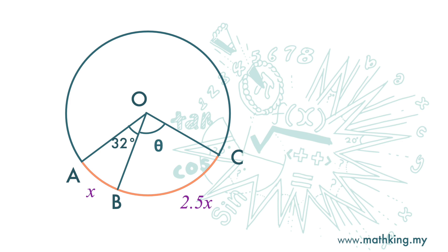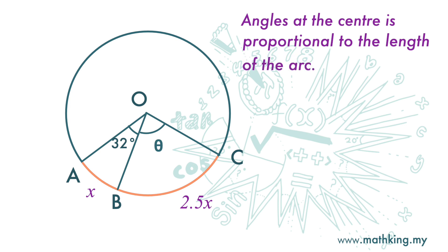Find angle theta. For this question, remember that the angle at the center is proportional to the length of the arc that subtends it. Arc AB is x and arc BC is 2.5x.